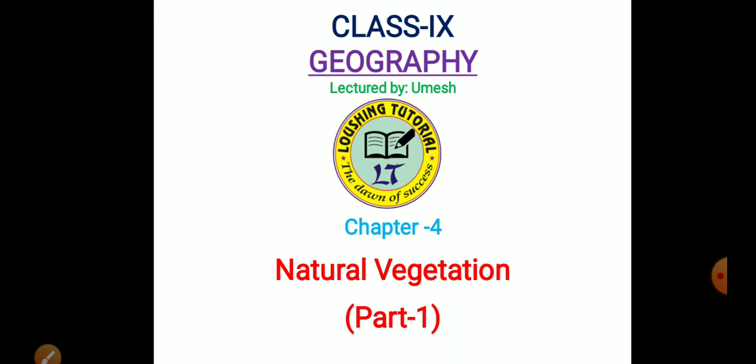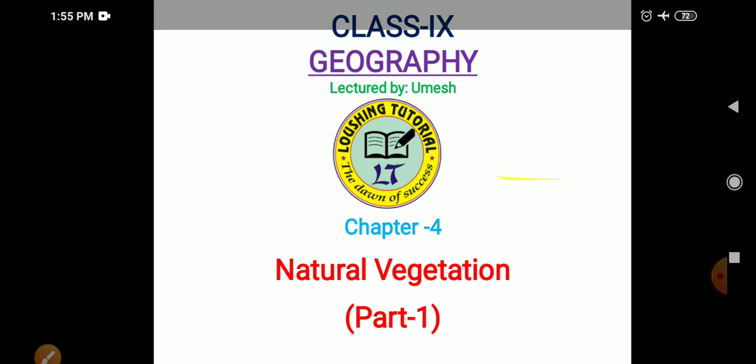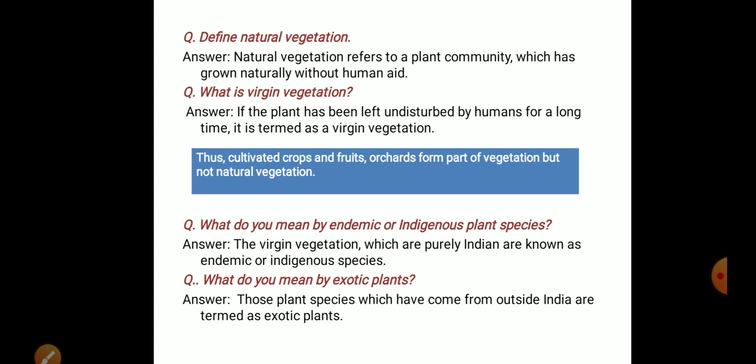We are going to provide information to our students. I'm going to ask you about Class 9 Geography Chapter 3 Climate, and also Chapter 4 Natural Vegetation. I'm going to ask you to define natural vegetation.